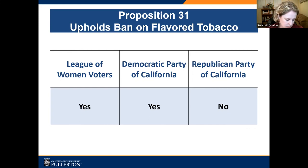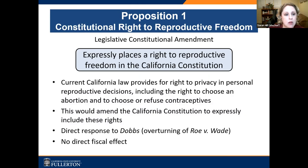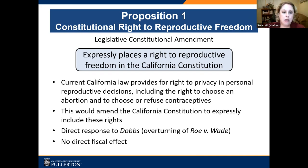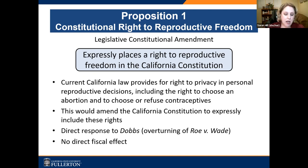A caller asks about Prop 1 and the term 'reproductive freedom.' The language in the proposition is: 'a right to privacy and personal reproductive decisions, including the right to choose an abortion and to choose or refuse contraceptives.' Similar to the original Roe decision which was based on the right to privacy, the California constitution also has that idea of a right to privacy, and that includes a right to personal decisions — including reproductive rights.